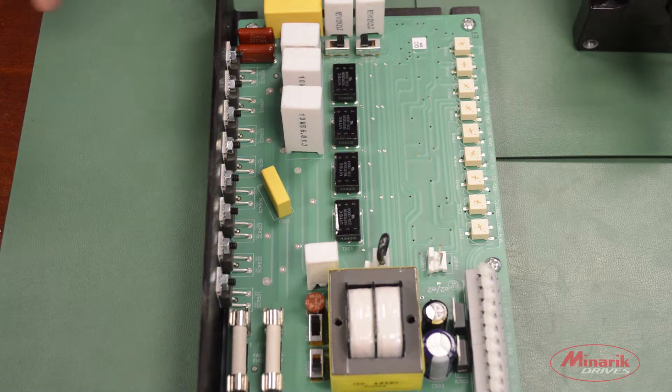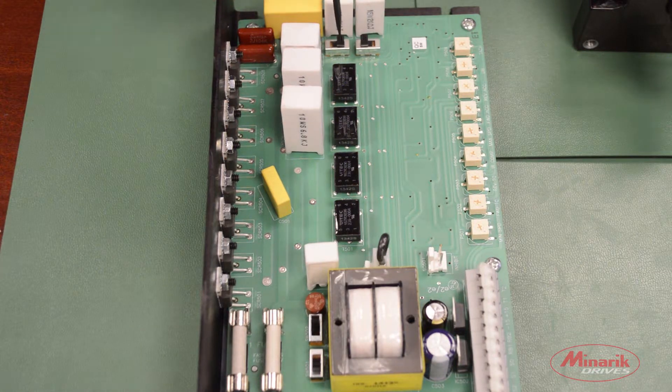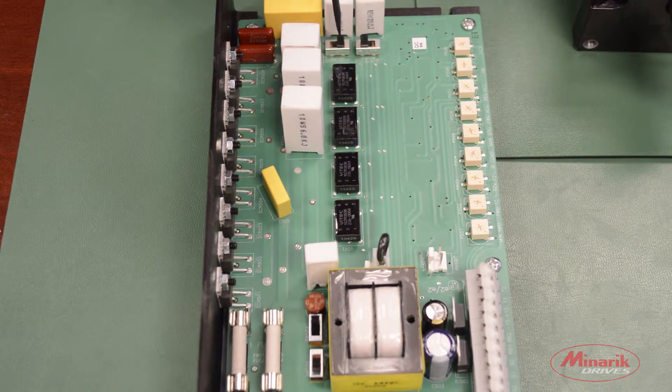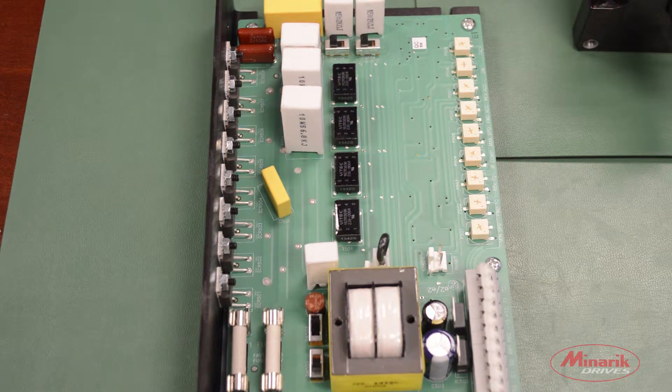The output voltage switch is located at the end of the drive and it's factory default set for 180. We're going to be using a 90 volt motor so we'll move that to the 90 volt position.